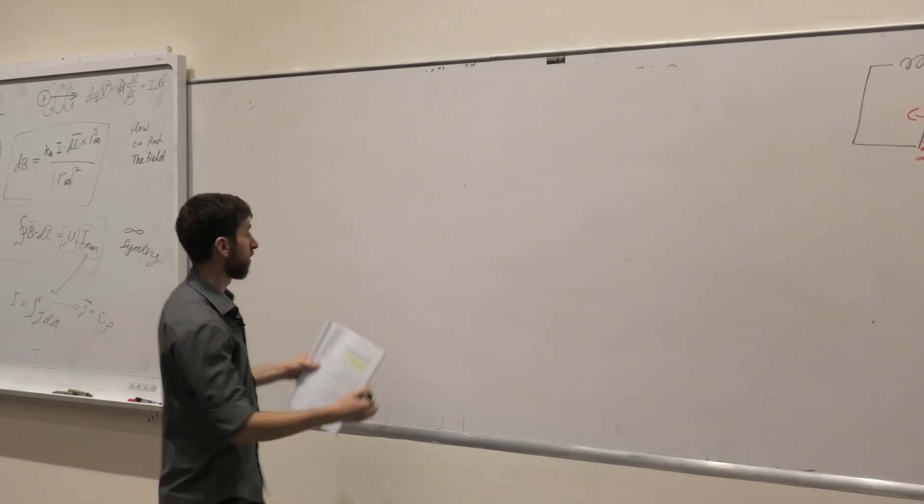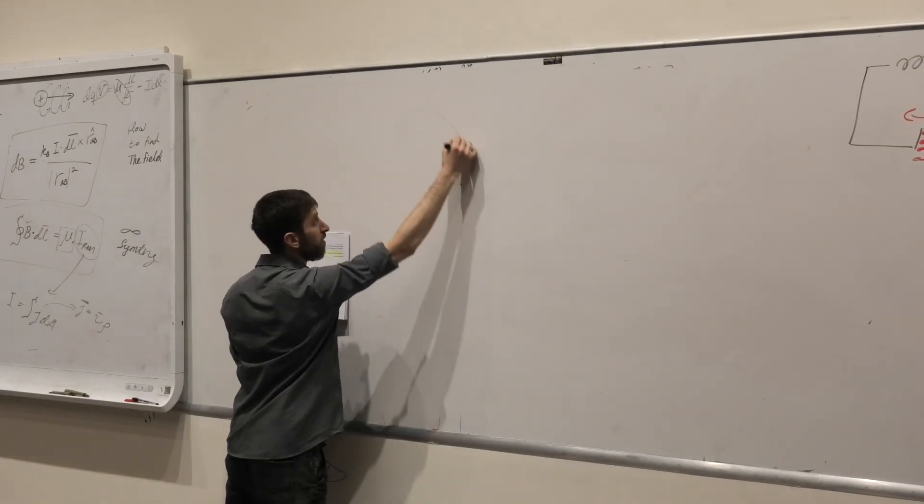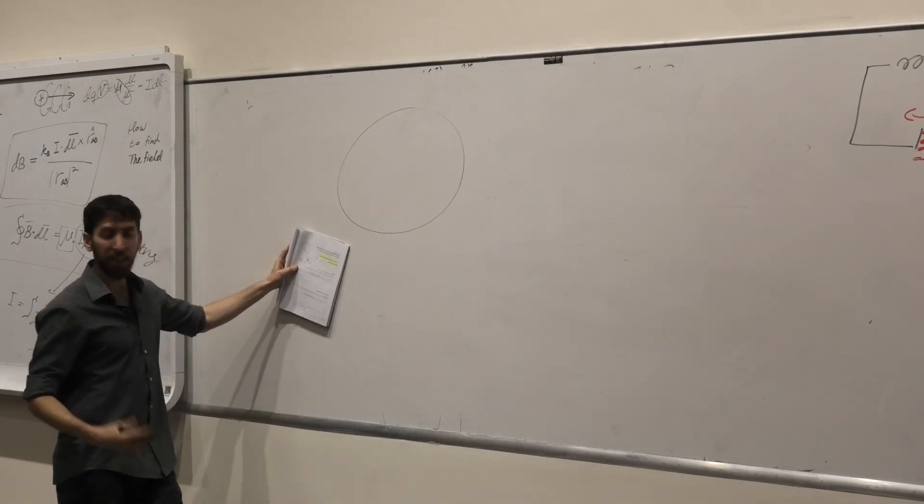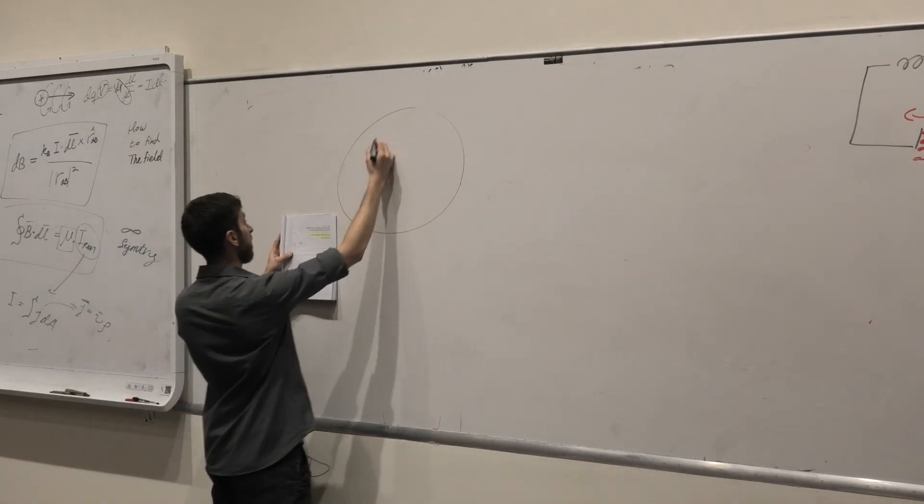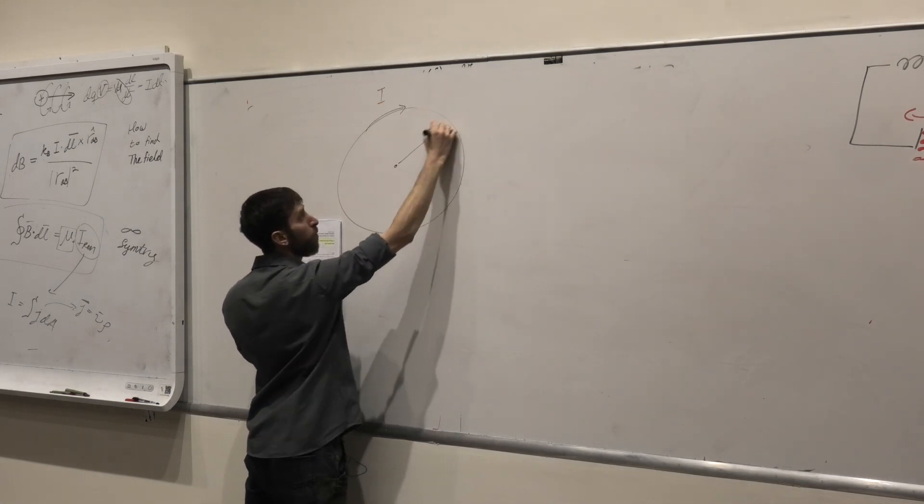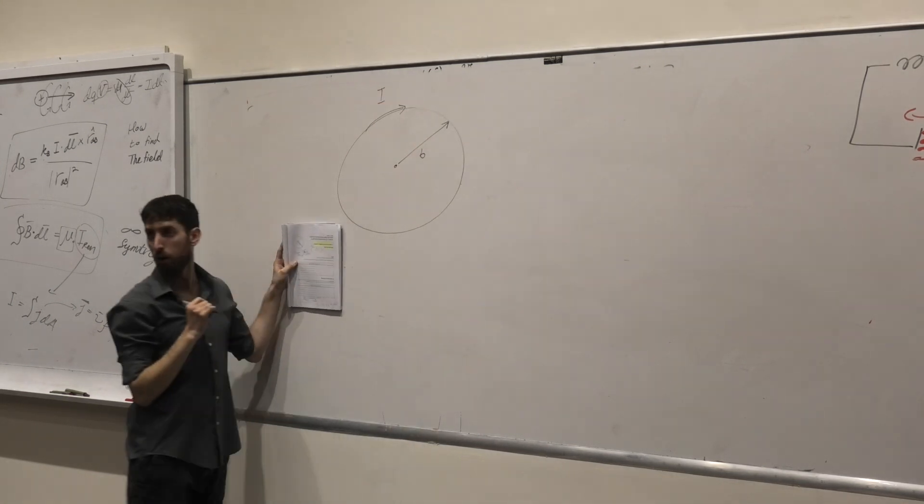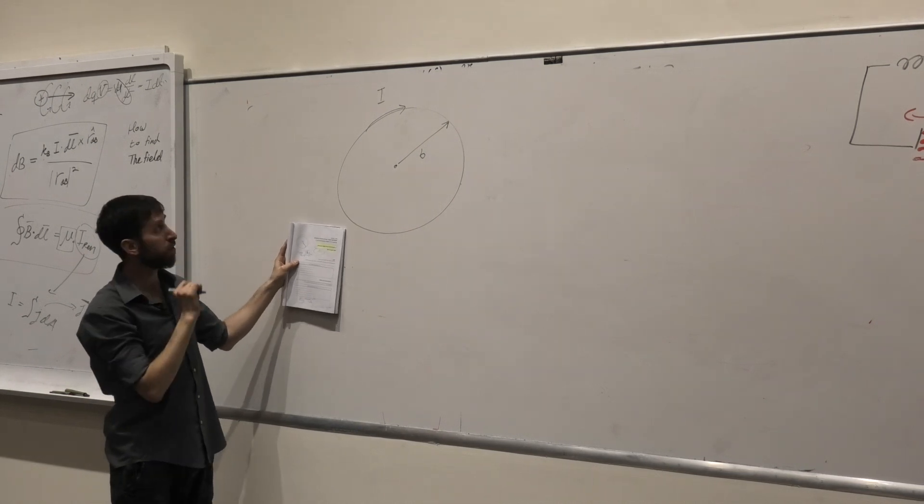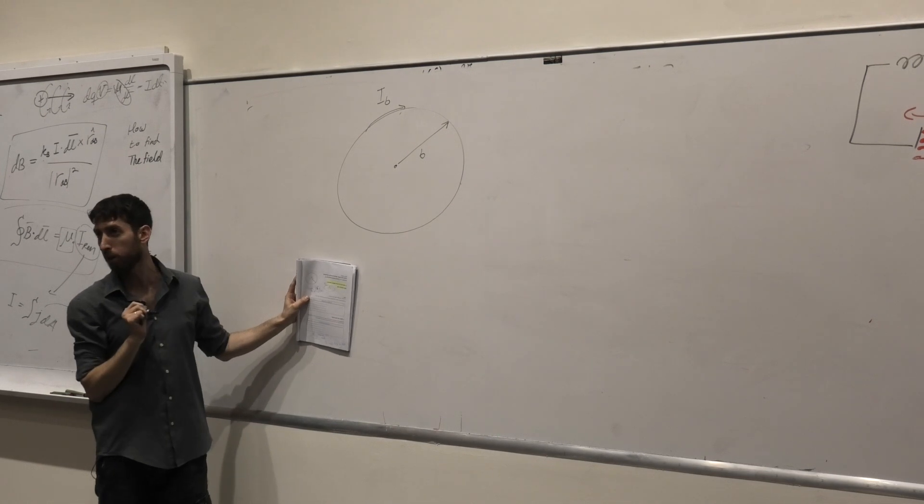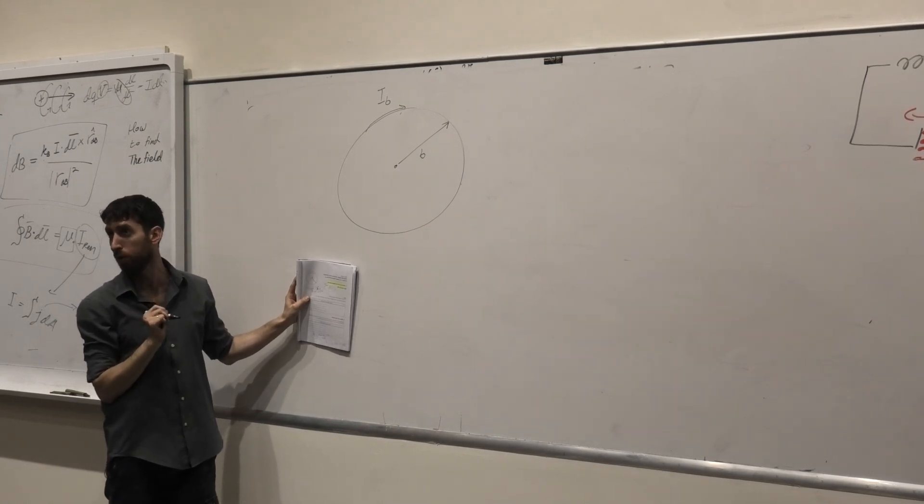Okay, in this question, we have a ring. This is the ring, a nice ring, and in the ring I have current. This is the current, and since the radius of the ring is b, I'm going to call this current also Ib, not to get confused.